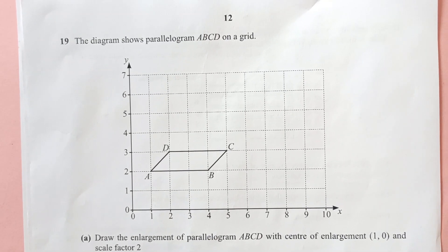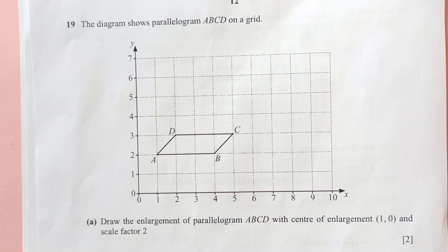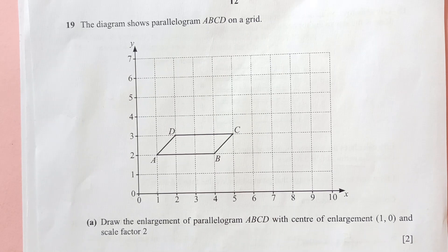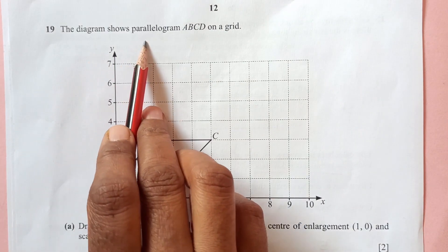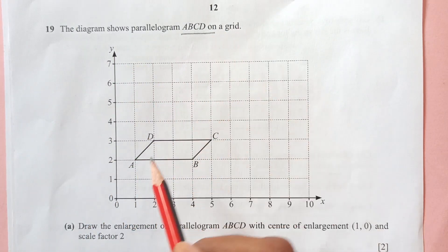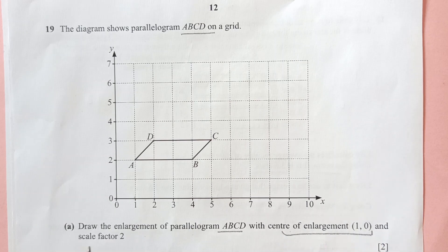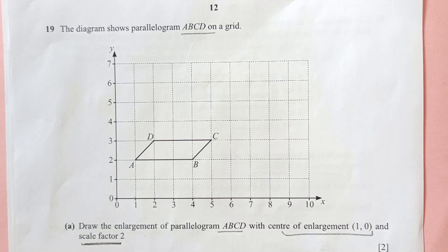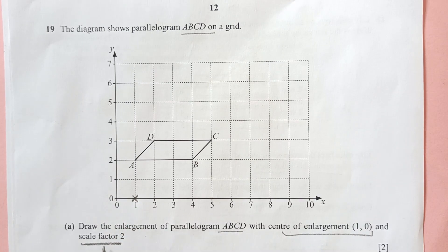Before we start this question I would request you guys to subscribe to my channel if you are new to the channel and please write in comment section your feedback. So I will wait for your comments and now let us do number 19. The diagram shows parallelogram ABCD on a grid. You see this diagram. Draw the enlargement of the parallelogram with the center of enlargement 1, 0 and scale factor of 2. So center of enlargement is 1, 0. 1, 0 is this point. So this is center and scale factor is 2.